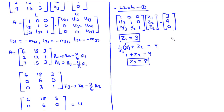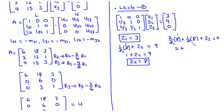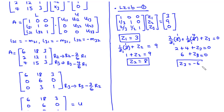From row 3: (2/3) times Z1 plus (1/2) times Z2 plus Z3 equals 0. Substituting Z1 = 3 and Z2 = 8: (2/3)(3) = 2 and (1/2)(8) = 4, so 2 plus 4 plus Z3 equals 0. Therefore 6 plus Z3 = 0, giving Z3 equals negative 6.